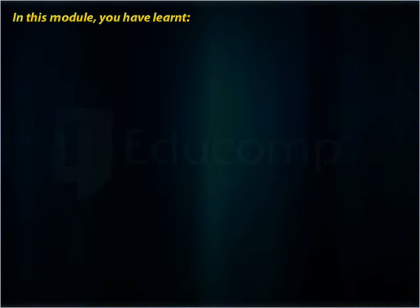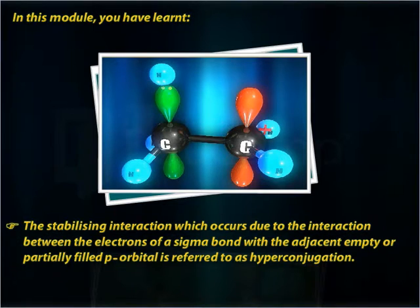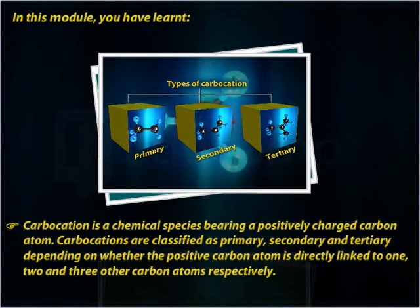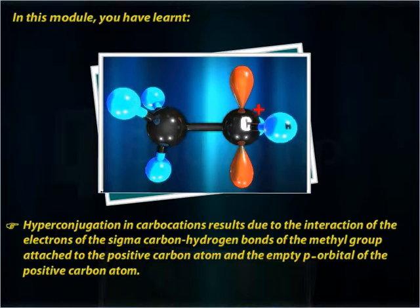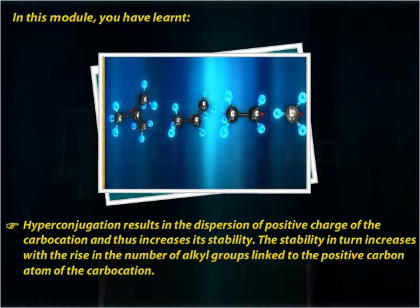In summary: the stabilizing interaction which occurs due to the interaction between the electrons of a sigma bond with the adjacent empty or partially filled p orbital is referred to as hyperconjugation. Carbocation is a chemical species bearing a positively charged carbon atom, classified as primary, secondary, and tertiary depending on whether the positive carbon atom is directly linked to one, two, or three other carbon atoms respectively. Hyperconjugation in carbocations results from the interaction of the electrons of the sigma carbon-hydrogen bonds of the methyl group attached to the positive carbon atom and the p orbital of the positive carbon atom, dispersing the positive charge and increasing stability.